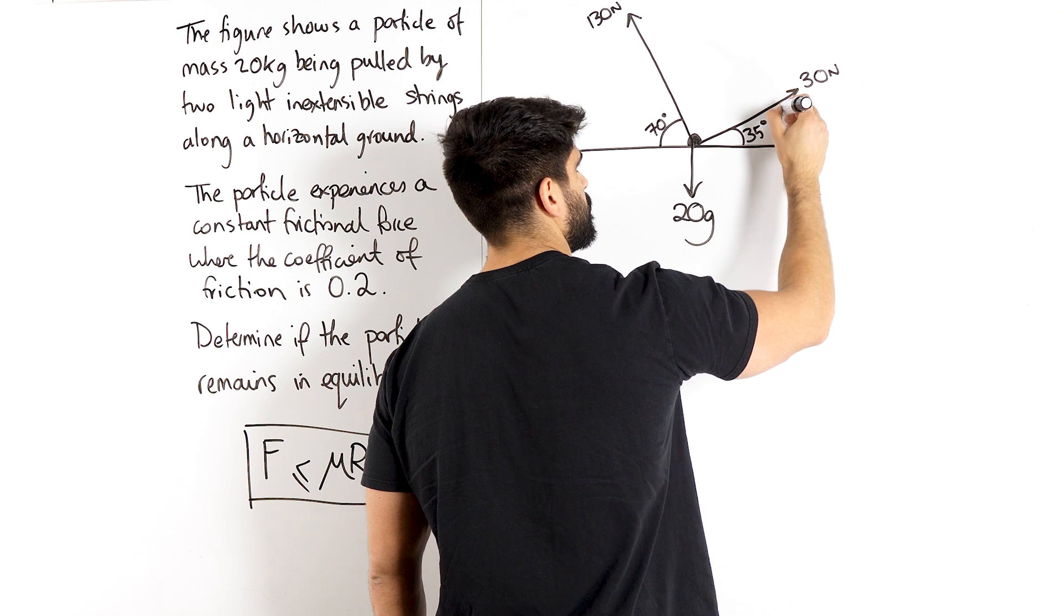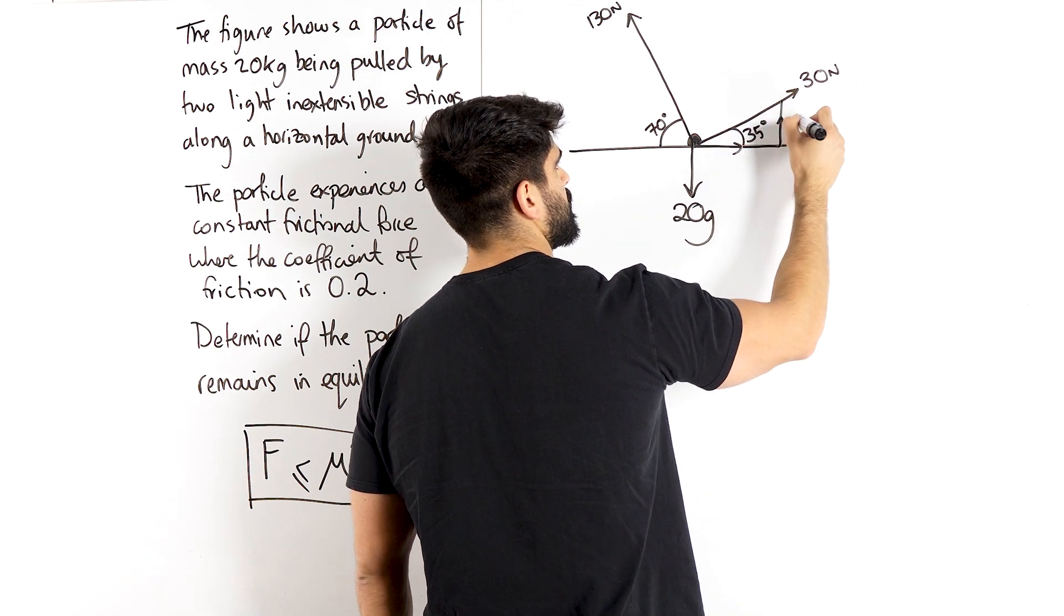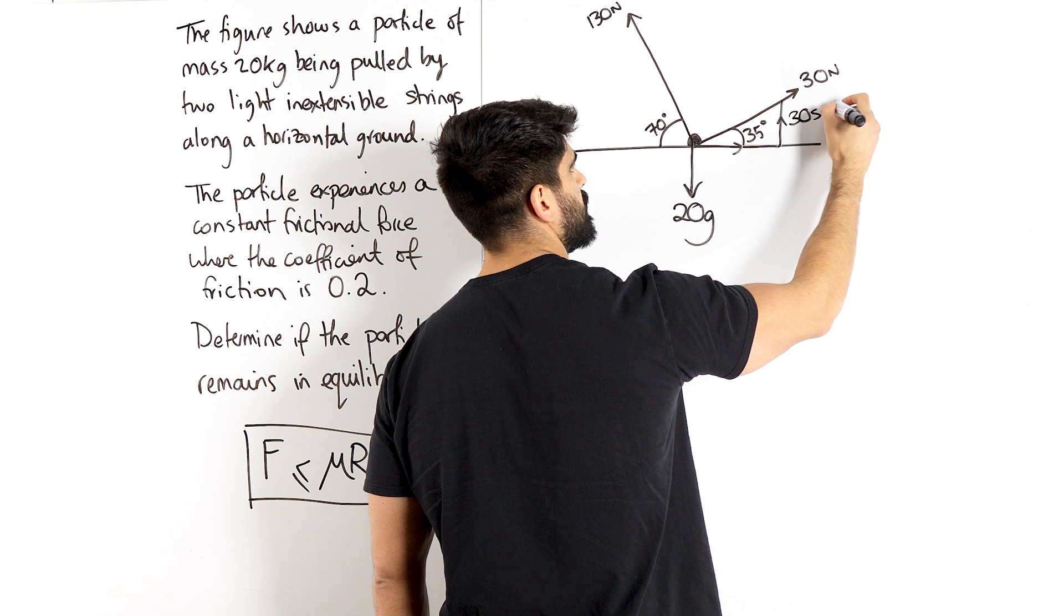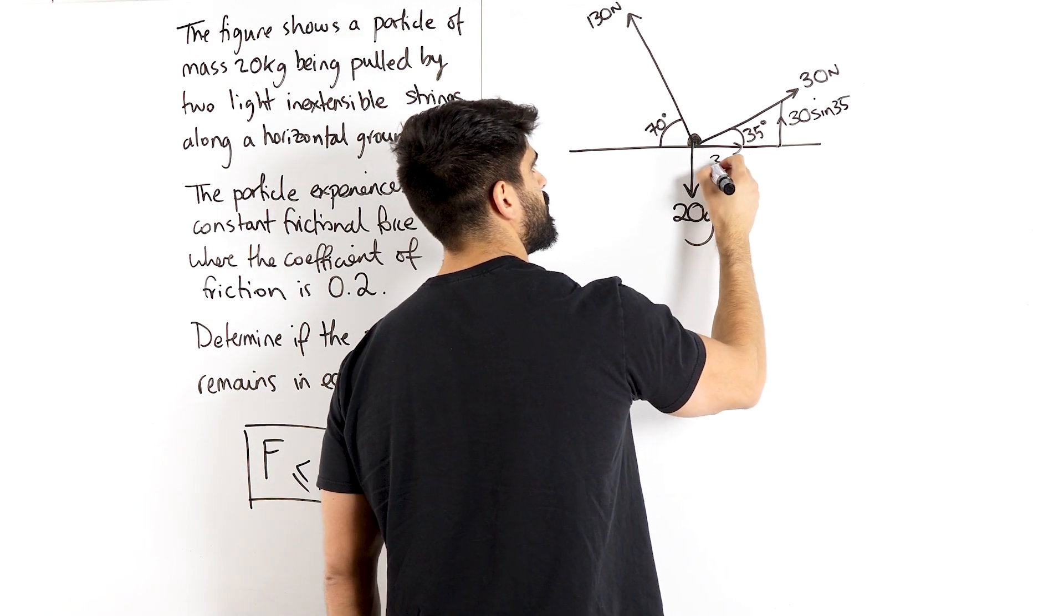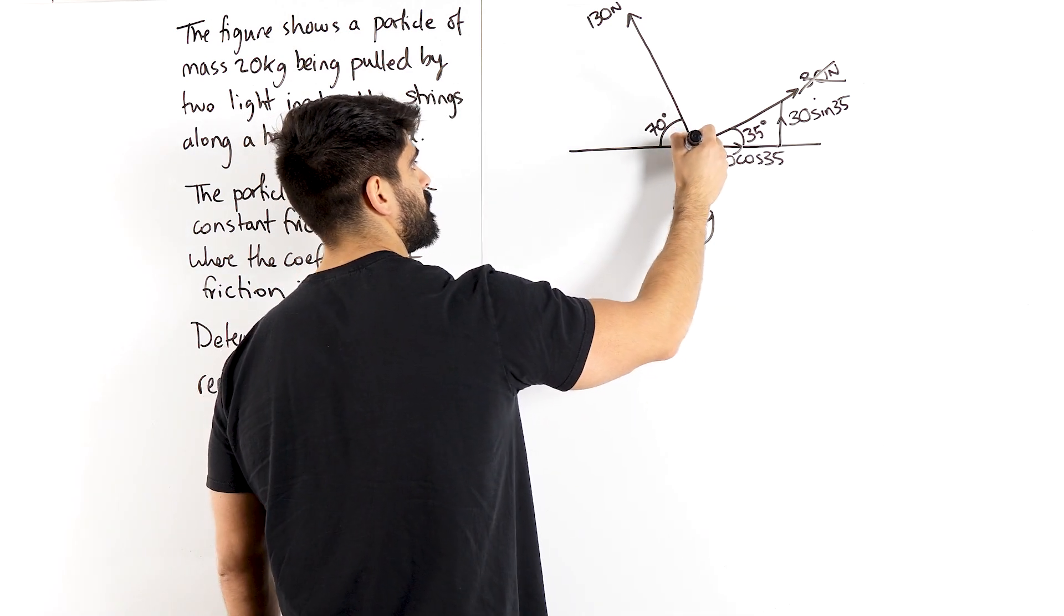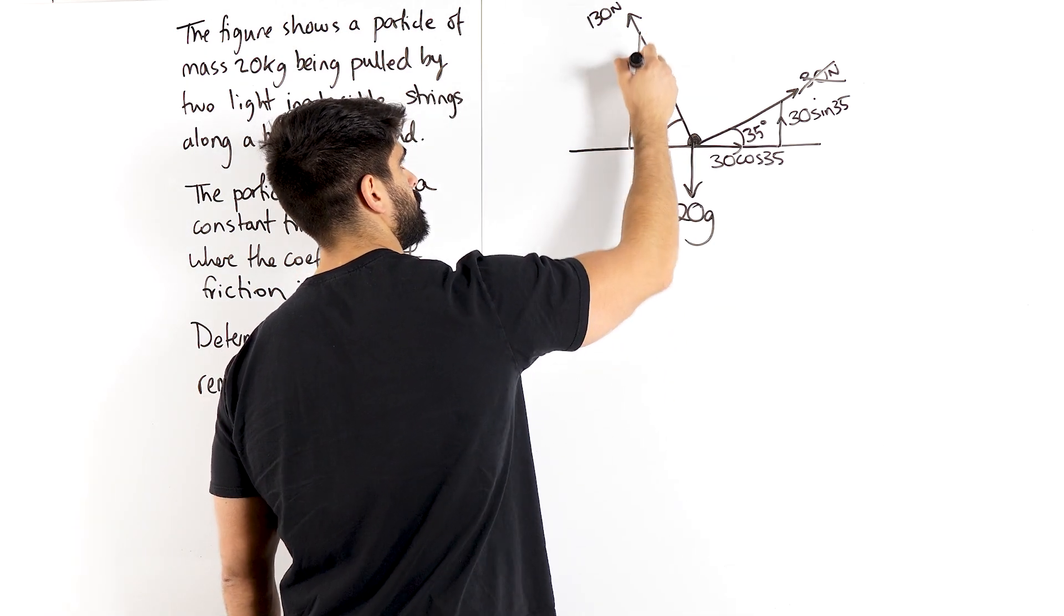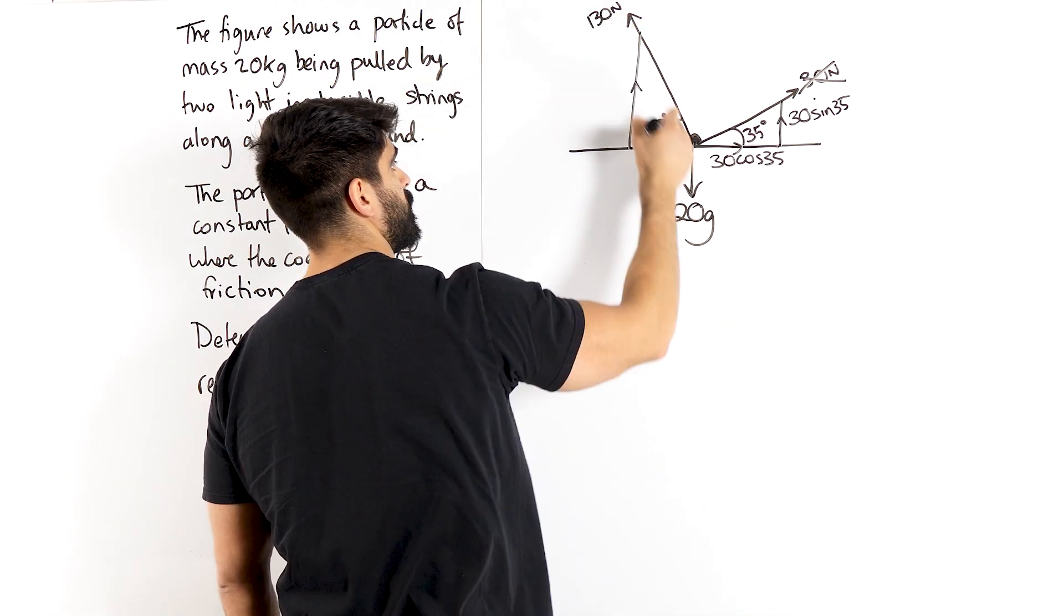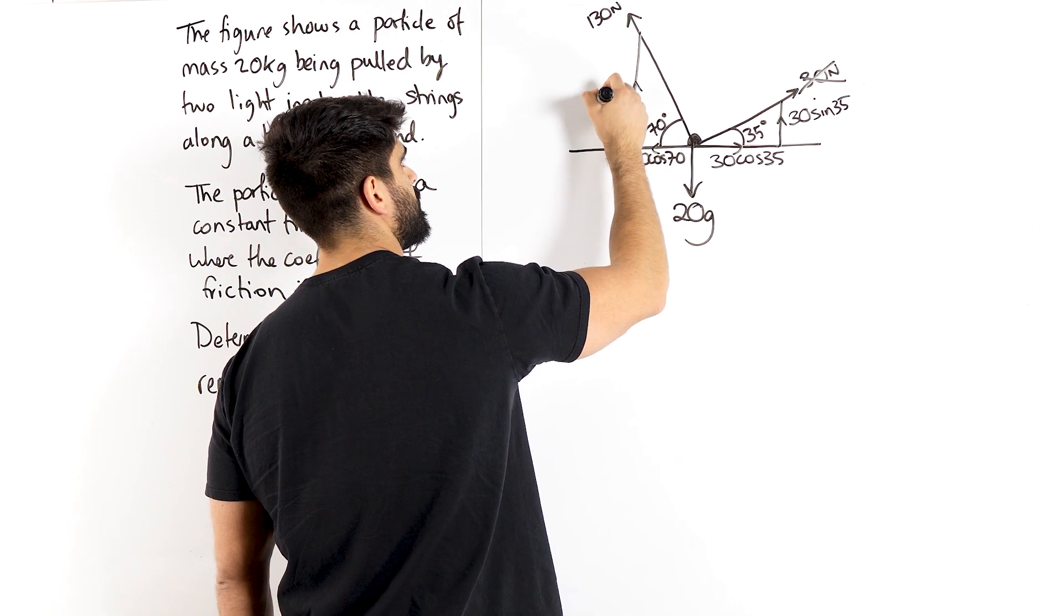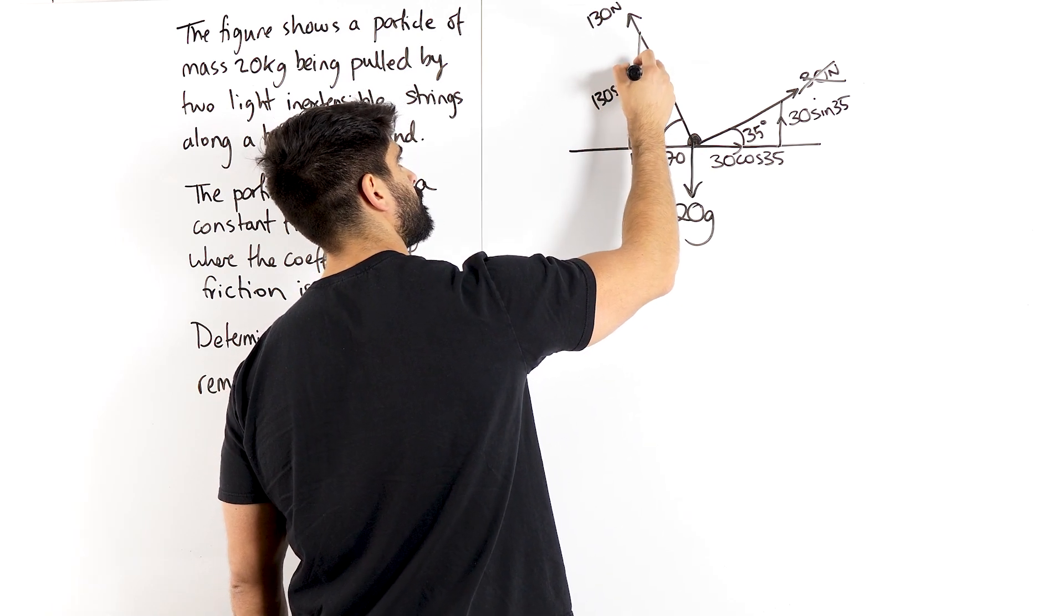So this is 30 in the hypotenuse. And this is the opposite. So this is going to be sin 35. And this is going to be 30 cos 35 dealt with. Then we've got this. This is going to be 130 cos. And 130 sin.